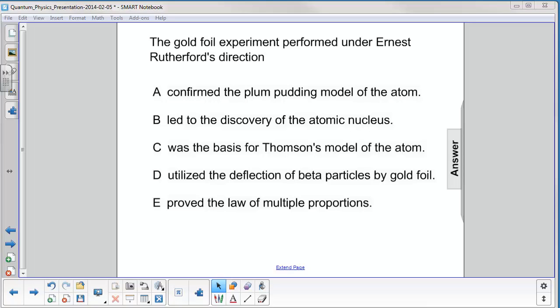C) was the basis for Thomson's model of the atom, D) utilized the deflection of beta particles by gold foil, and E) proved the law of multiple proportions.